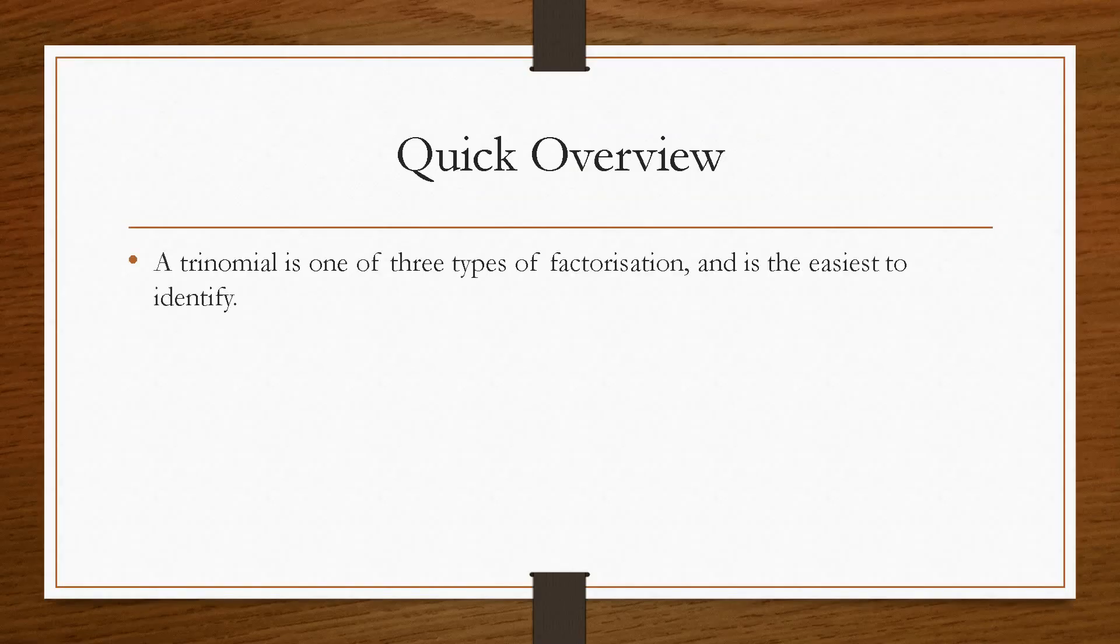So if we take a quick overview, a trinomial is one of three types of factorisation and it is the easiest to identify. A trinomial must contain three terms: an x squared, an x, and a number by itself. If you don't have these three terms, it is not a trinomial and you must use another method to factorise.